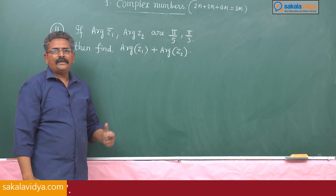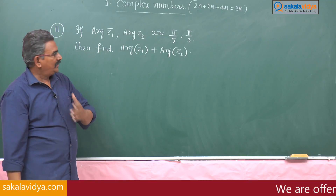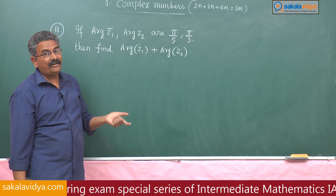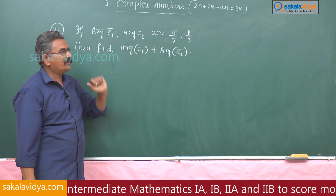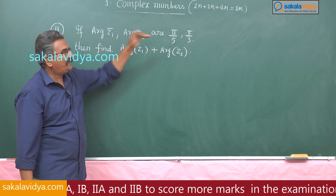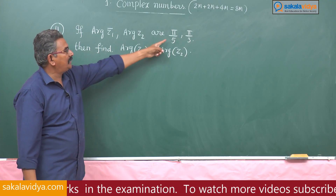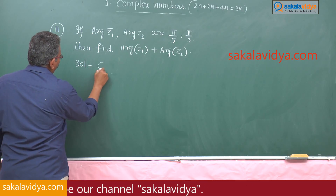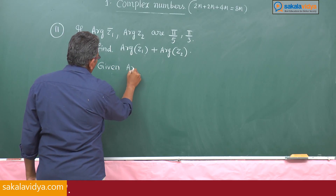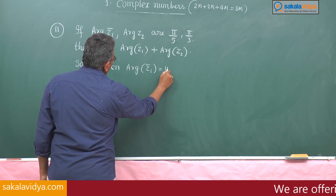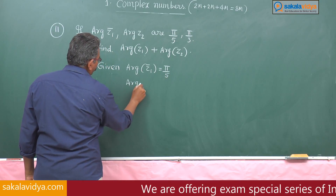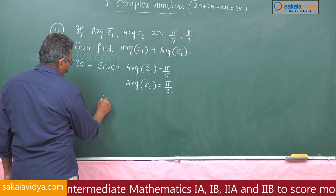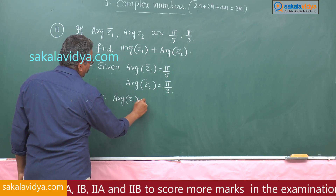One may get confused while solving this problem by directly adding the two arguments. But note carefully: argument of z₁ bar is given, not argument of z₁. Since argument of z₁ bar equals pi by 5, the argument of z₁ is nothing but minus pi by 5. Given: arg(z̄₁) equals pi by 5 and arg(z₂) equals pi by 3.